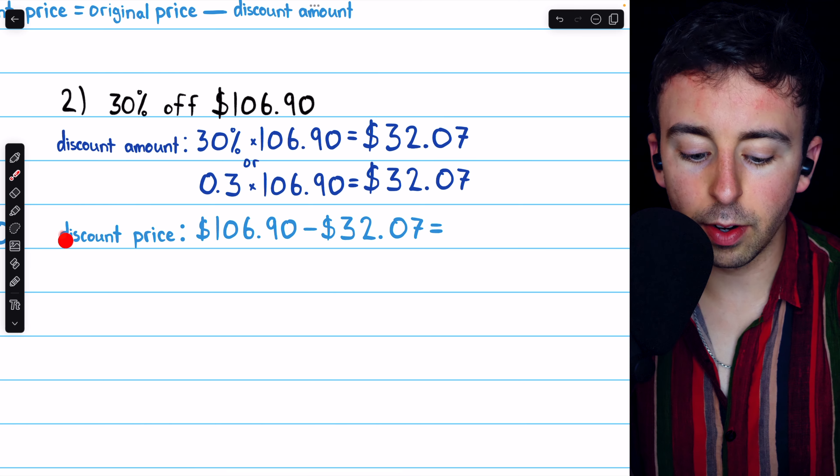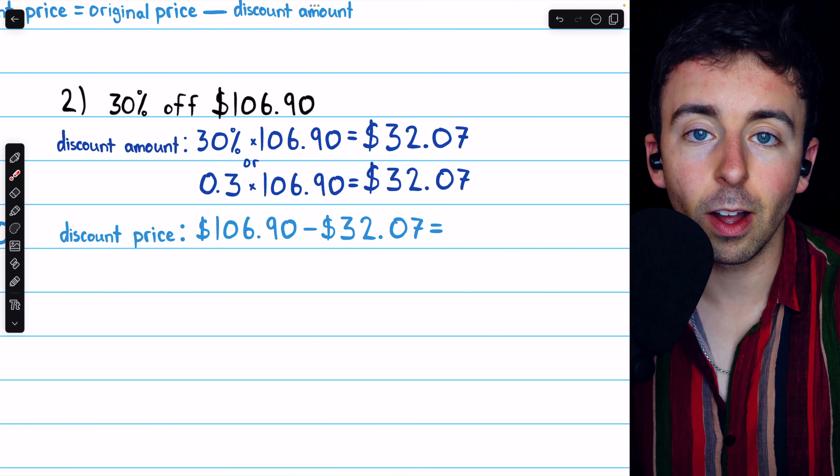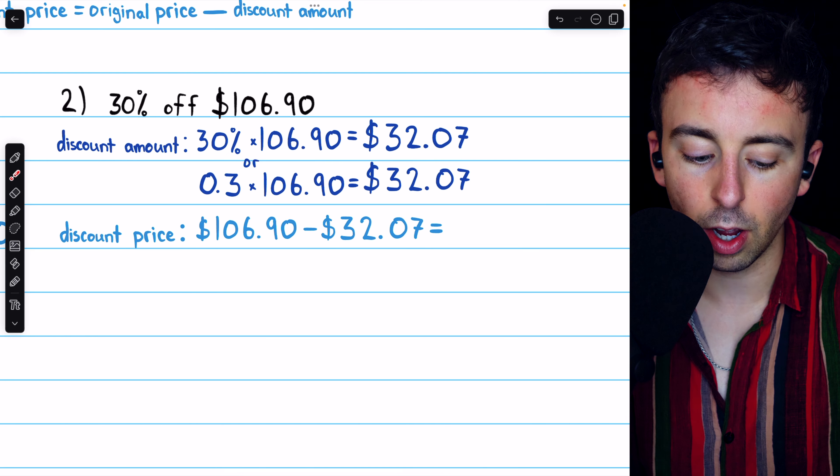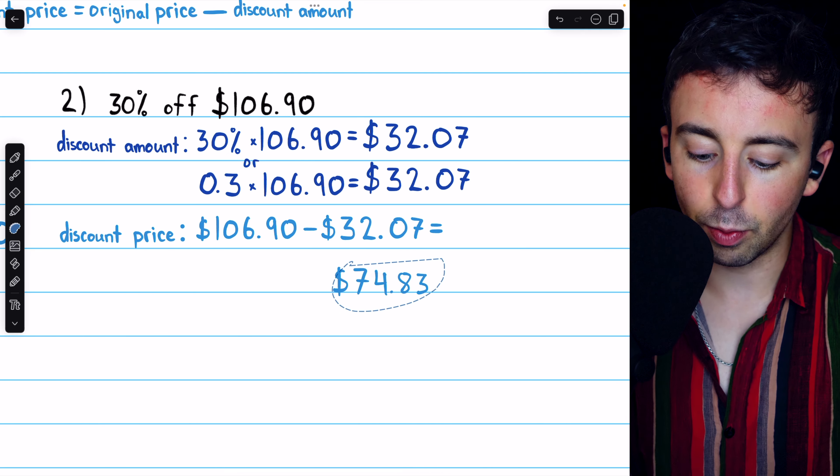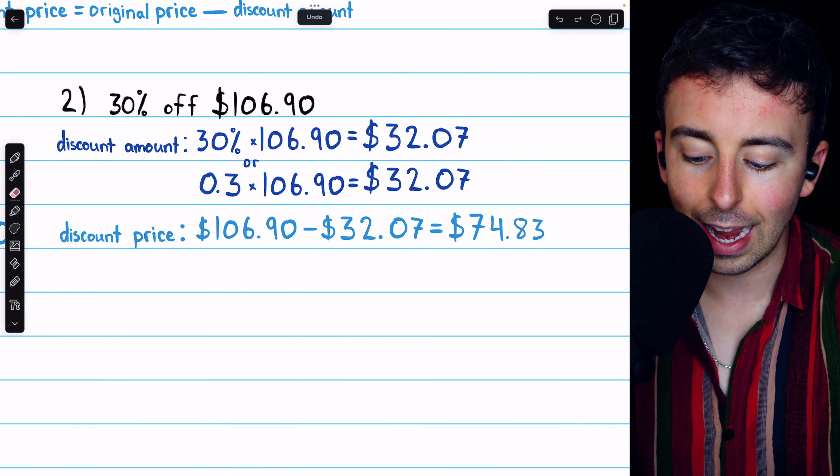From here, it's straightforward to find the discount price. Just take the original price, $106.90, and subtract that discount amount, $32.07. If we do that, we find the discount price is $74.83.